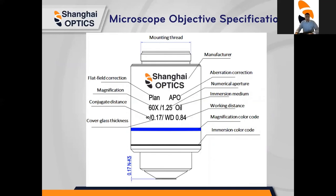You can always find the specifications of an objective lens on the lens barrel. This includes the magnification, aberration, numerical aperture, and many more. When you look at the objective lens, we see the magnification of 60x, an infinity symbol which tells us this is an infinite conjugate objective, and we know the resolution based off the numerical aperture of 0.95.